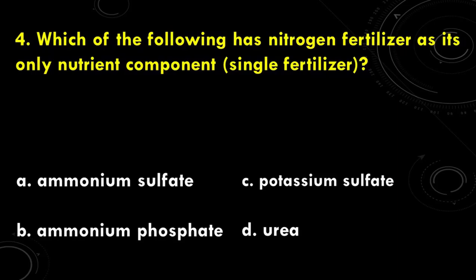Question 4: Which of the following has nitrogen fertilizer as its only nutrient component, or a single fertilizer? Is it A. Ammonium sulfate, B. Ammonium phosphate, C. Potassium sulfate, or D. Urea? The correct answer is letter D, Urea.